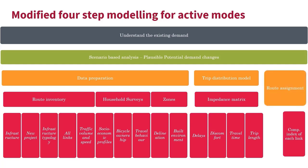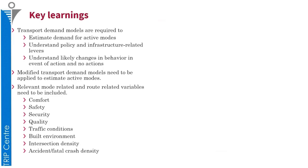For route assignment, preparing a compatibility index for each type of link helps better estimate demand on each link. Overall, modeling transportation demand for mechanized modes is different from modeling active modes. When modeling demand for conventional modes, active modes should be included; otherwise, relevant policies and infrastructure development may not be identified. Modeling active demand also helps identify specific levers and control variables that can encourage users to bicycle and walk in the city.